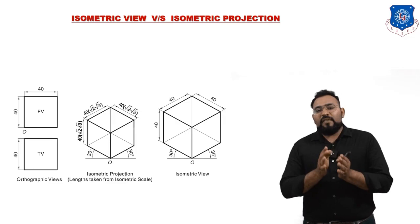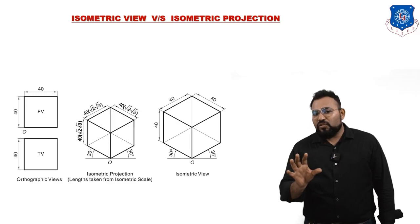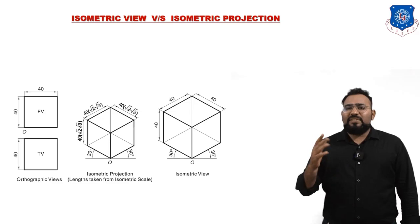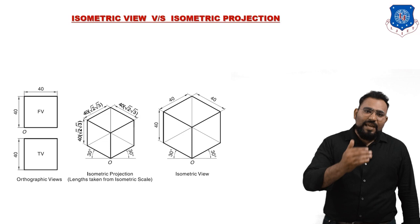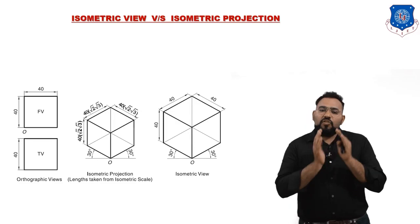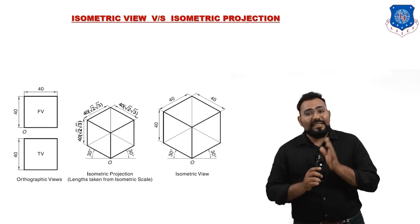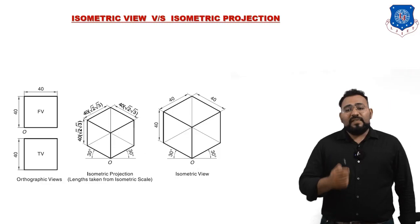Sometimes an example will ask you to draw isometric view and sometimes isometric projection. Always pay attention to this word. Students often make this kind of mistake and lose marks. When he says 'draw isometric view,' you develop the 3D drawing with actual dimensions. When he says 'draw isometric projection,' you develop the 3D drawing by multiplying actual dimensions by a value according to the isometric scale.